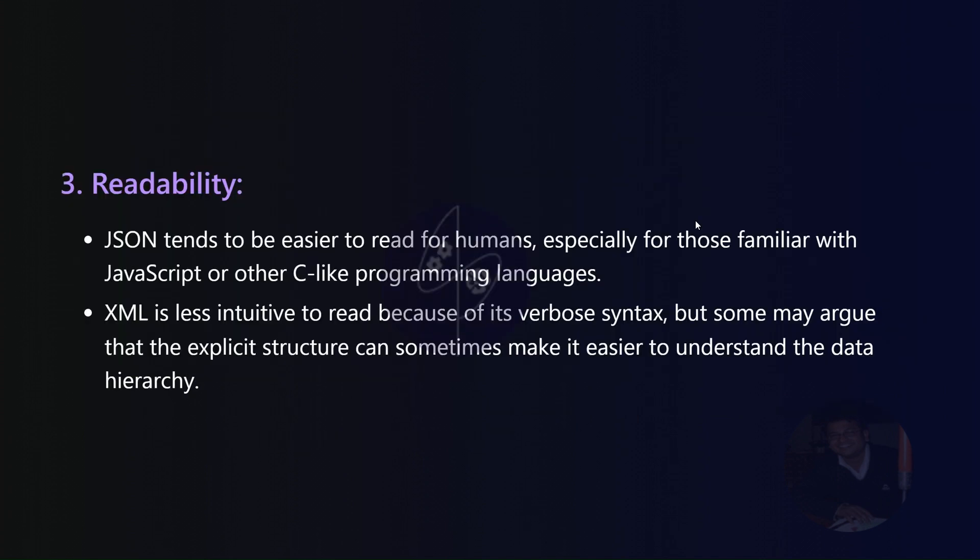Readability. JSON often excels in human readability, especially for those familiar with JavaScript or similar programming languages. XML, although verbose, may be considered more explicit in representing data hierarchy.